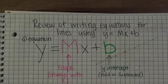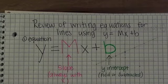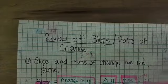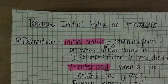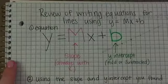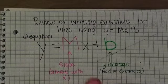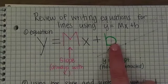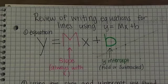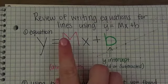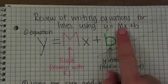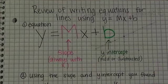This is a review of writing equations for lines using y equals mx plus b. This video is supposed to go after the other two videos — the review of initial value and the review of slope and rate of change. If you haven't watched those and some of this doesn't make sense, you might want to go back and watch those videos. This video assumes you remember how to find slope and the y-intercept, then we're just going to write the equation.